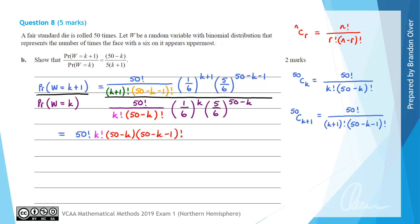The denominator will have (K plus 1) factorial, which I rewrite as (K plus 1) times K factorial, and (50 minus K minus 1) factorial in orange. Multiplying by the flipped fraction also brings the 50 factorial from the bottom expression into the denominator of our new fraction. Some terms on the numerator and denominator will now cancel.